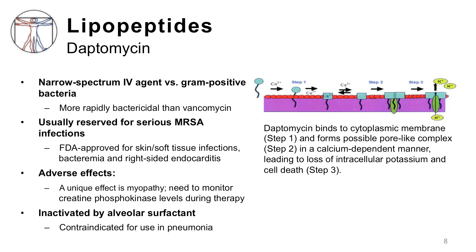Daptomycin is usually reserved for serious MRSA infections. It is FDA-approved for skin and soft tissue infections, bacteremia, and right-sided endocarditis. Daptomycin is relatively well-tolerated; however, you should be aware of the unique adverse effect of myopathy, or muscle damage, which requires monitoring of serum CPK levels to allow the treating physician to stop the drug if they rise during therapy.